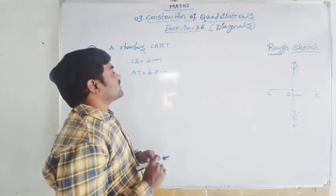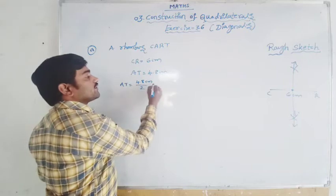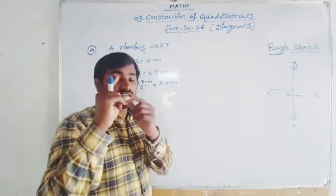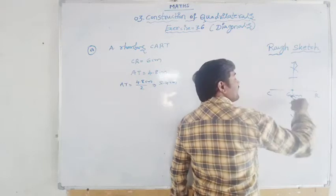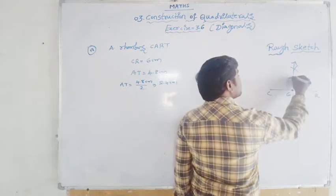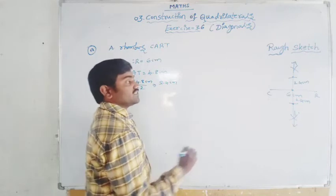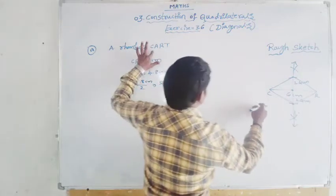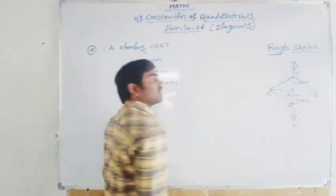Now we have to locate A and D points. AD equal to 4.8 centimeters. You divide 4.8 by 2, that is equal to 2.4 centimeters. That means you have to enlarge your compass with a radius of 2.4 centimeters, keep it at this middle point, and draw arcs upward and downward, intersecting our perpendicular bisector line. They are intersecting here and here — this is 2.4 centimeters and this is 2.4 centimeters, completely 4.8 centimeters. Now you got the exact positions. Just join these points. The rhombus CARD is ready.